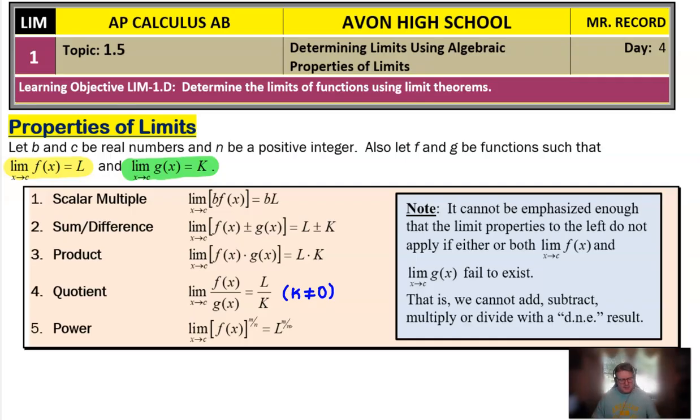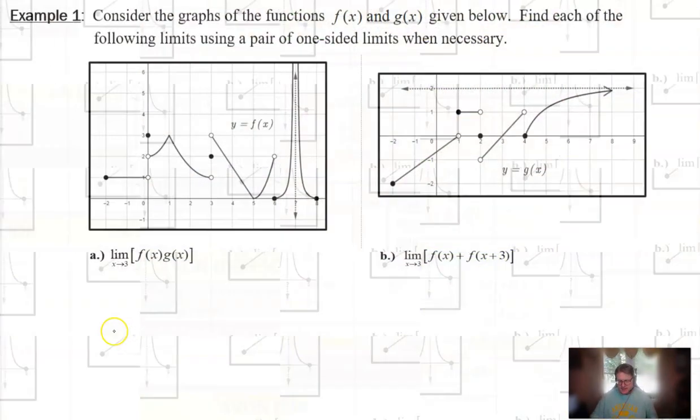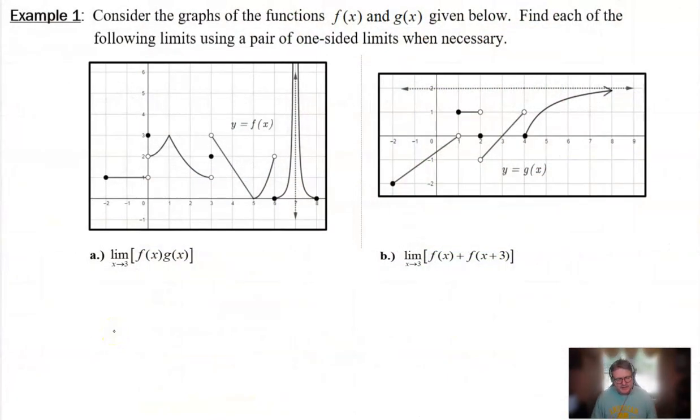Okay let's go ahead and take a look at one example and put this into practice. All right so up above here it says consider the graphs of the functions f of x and g of x that are given below. We want to find the following limits by using a pair of one-sided limits when necessary. Well boy that's new where's this notion of the one-sided limit come in? Well let's take a look.